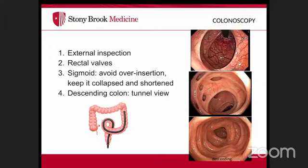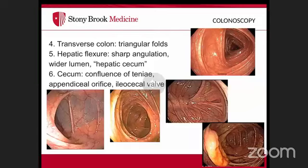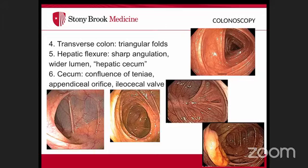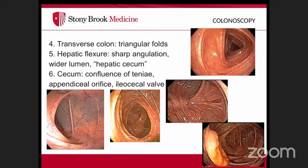After the sigmoid, the descending colon appears as a tunnel view. Advance to the splenic flexure and into the transverse colon, which has triangular folds. At both flexures, paradoxical movements — where pushing the scope causes apparent withdrawal — may occur due to looping. Maneuvers include pulling back to eliminate loops, jiggling, applying suction, changing patient position to supine, applying pressure in the left lower quadrant, or stiffening the scope.